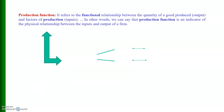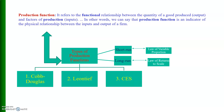Let me start with the definition of production function. Production function refers to the functional relationship between inputs used in the production and output. Simply, we can say that production function is an indicator of the physical relationship between the inputs and output of a firm.